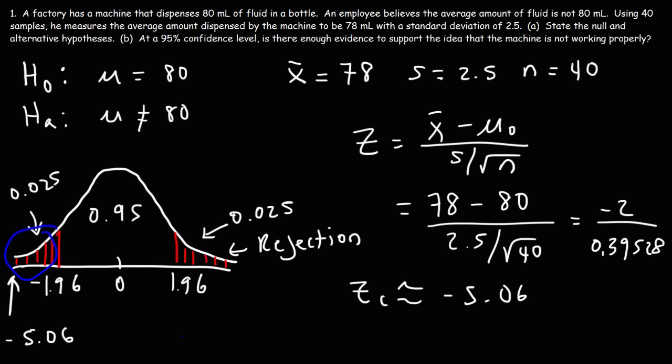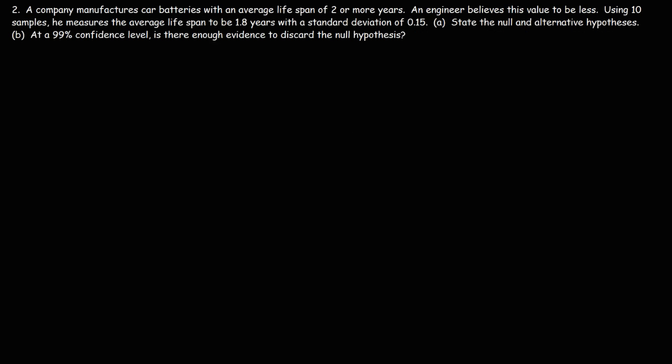Before we move on to the next problem, I want to mention something. I simply stated that for a 95% confidence level the z-value is 1.96, but I didn't explain how to get it. I did cover this in another video. If you go to YouTube and type in 'how to find the z-score given the confidence level of a normal distribution' and add 'organic chemistry' to that search, you should find a video that explains how to get this z-value given the confidence level. Once you get the first z-value, the other one is the same, just negative due to symmetry.